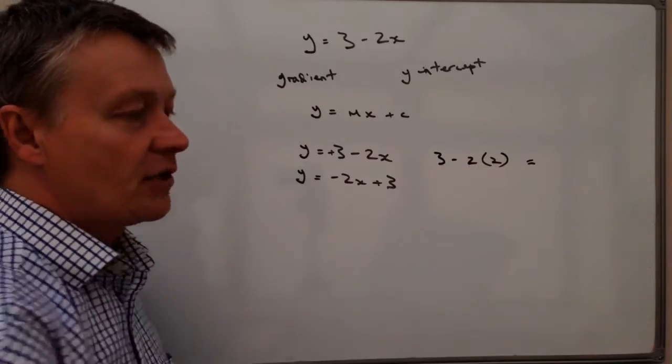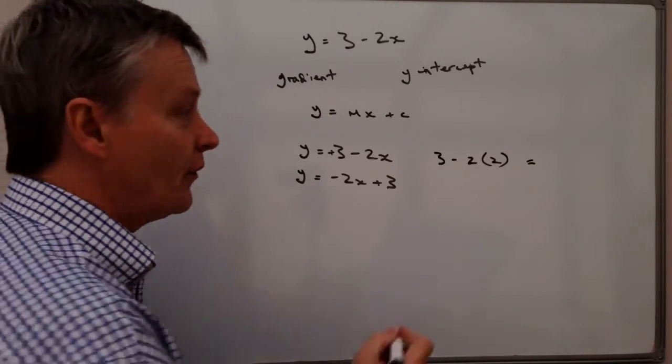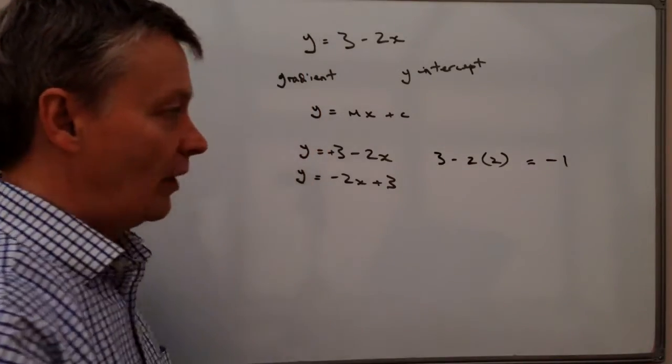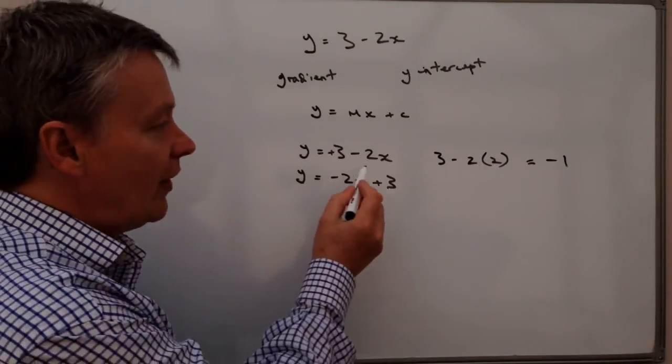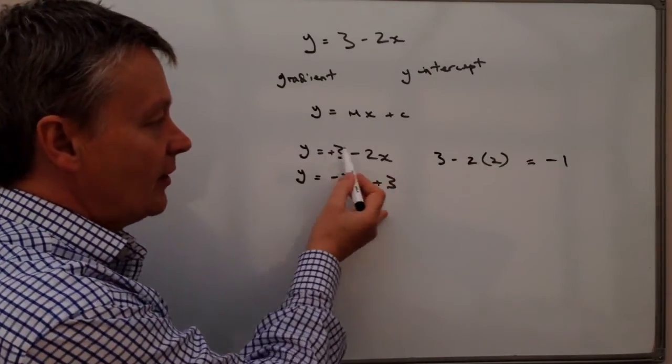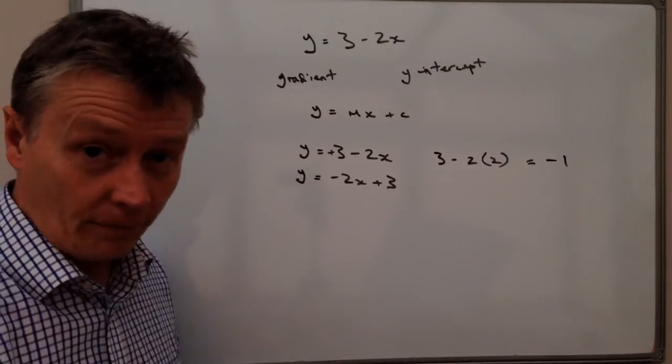Well, three minus two times two is four, so three minus four is minus one. So if I have a value of two in that equation, it comes out as being minus one.